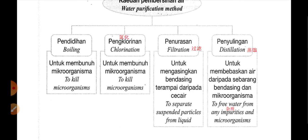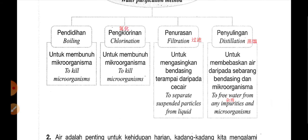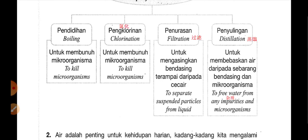然后到下一个 filtration，penyurasan 就是过滤的意思，过滤，你们家都会有个过滤器嘛，去过滤那些水的。过滤它的目的是 to separate suspended particles 那些浮在水里面的 particles from liquid，好像小沙子啊，小石头啊，那些比较大块的杂质，用 filtration 可以过滤掉。然后到 distillation，distillation 就是蒸馏，它的目的是 to free water from any impurities and microorganism。Distillation 是为了让那个水分开它的杂质还有它的 microorganism，给你看一个图画你就明白了。